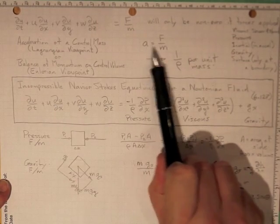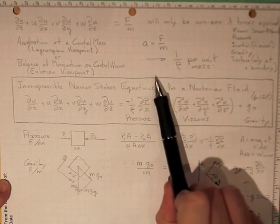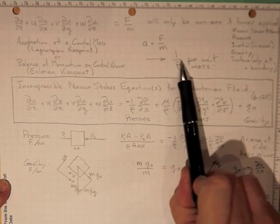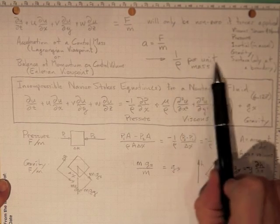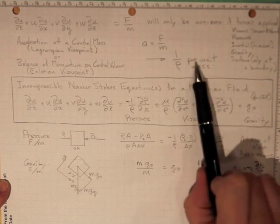The acceleration is equal to the force divided by the mass. We're going to wind up with one over rho in all of our terms to pick up this per unit mass effect.